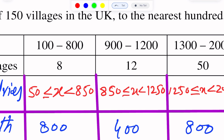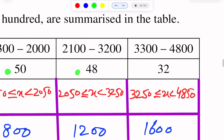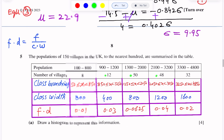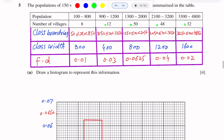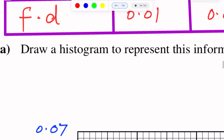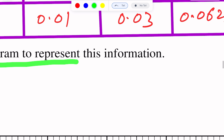The frequencies are 8, 12, 50, 48, and 32. Part one of this question is to draw a histogram to represent this information.